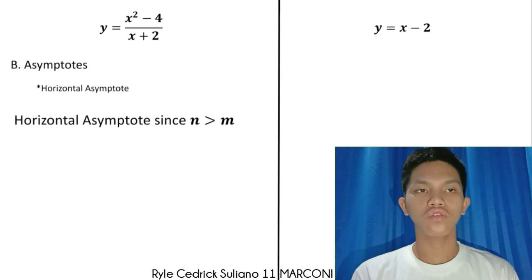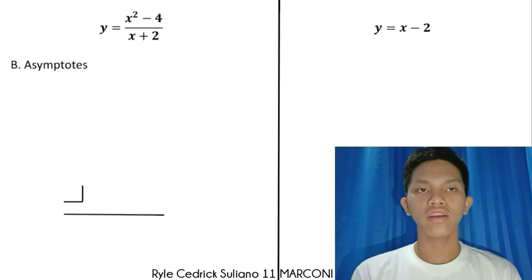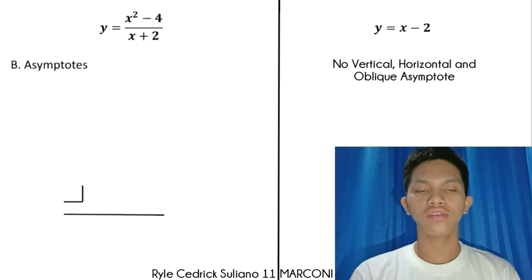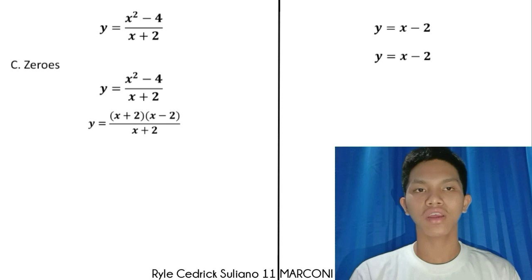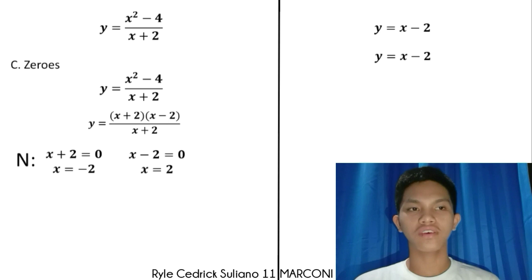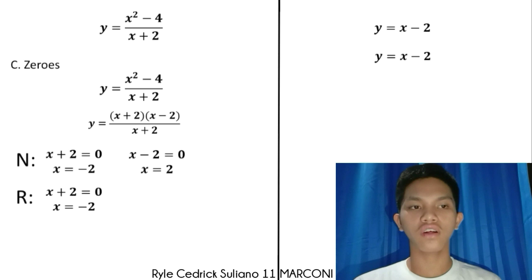For the horizontal asymptote, function number one has no horizontal asymptote since n is greater than m — the degree of the numerator is one higher than the denominator — so we use an oblique asymptote. We equate the denominator to zero, so x equals negative 2, then perform synthetic division, resulting in y equals x minus 2. We reduce the function to lowest terms and identify the restricted value, which is negative 2. The zero for the first function is x equals 2, and for the second function x equals 2 as well.